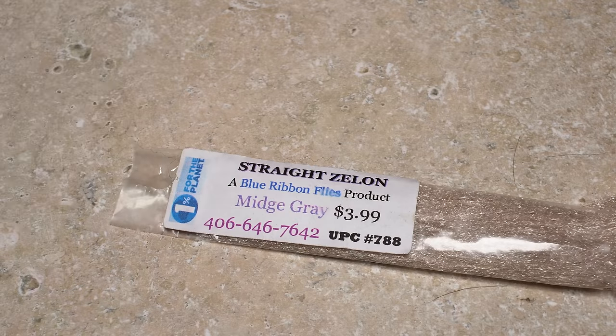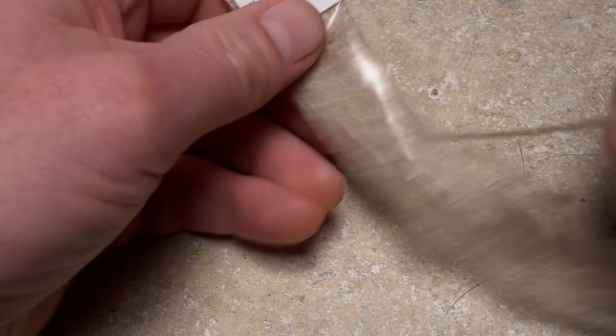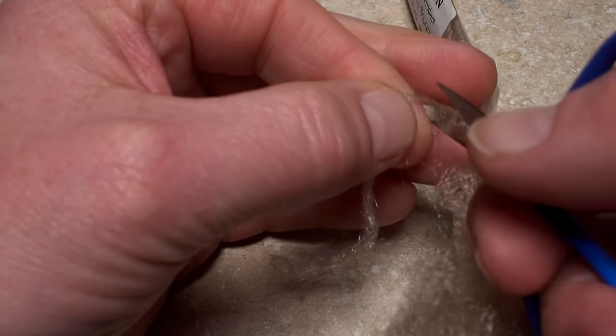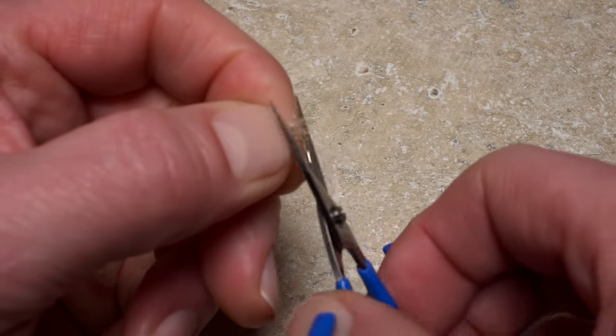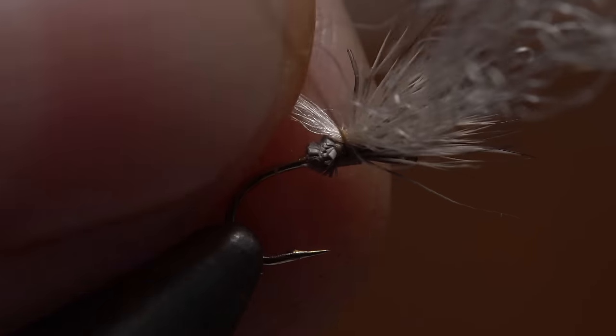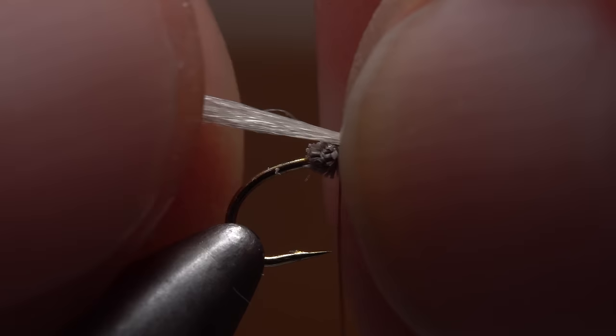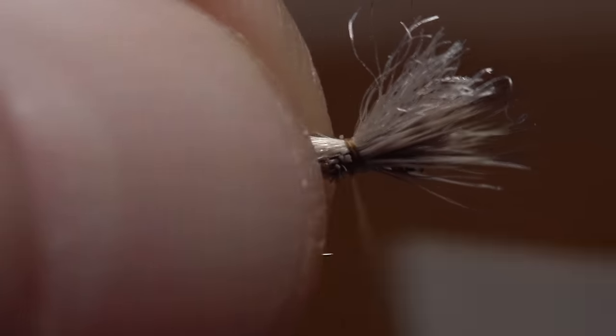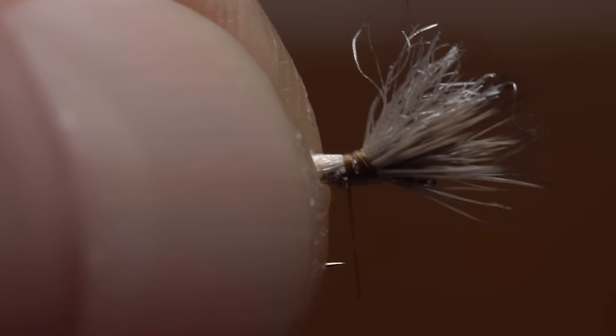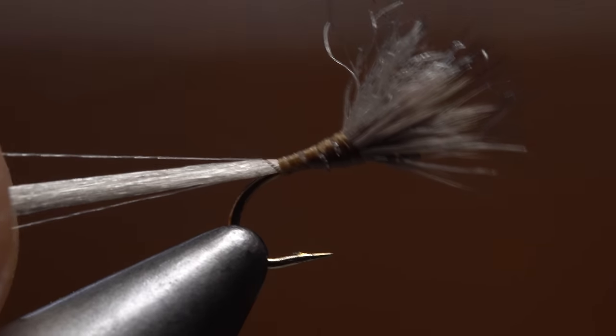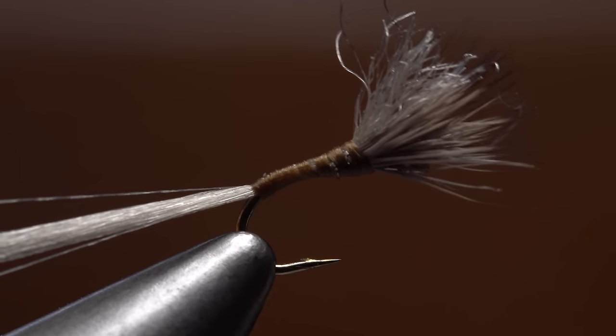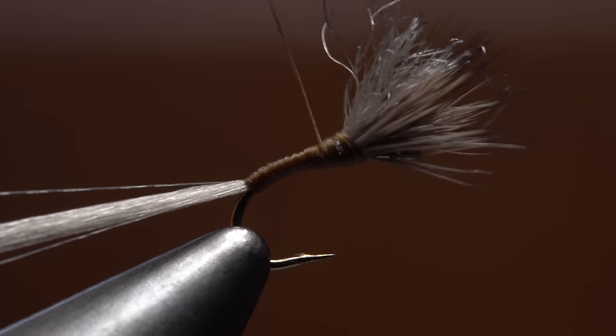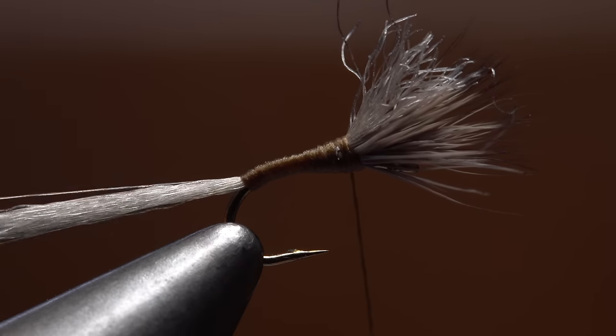For the tail and to add some sparkle to the wing, he uses midge gray straight Zeelon. A couple of inches is enough to make numerous flies. After snipping a strand free from the hank, Matt trims one end off square and then gets the Zeelon placed and secured on top of the hook shank, so the snipped off ends are about the same length as the deer hair wing. He then uses wraps of tying thread to bind the rest of the Zeelon to the top of the hook shank a short ways down into the bend. Matt follows this with wraps of tying thread forward to form a nice even body on the fly.